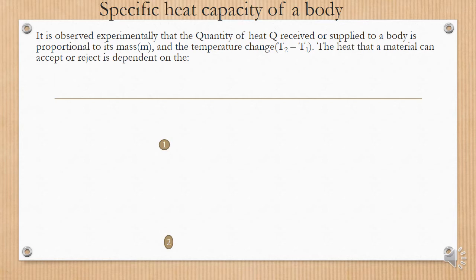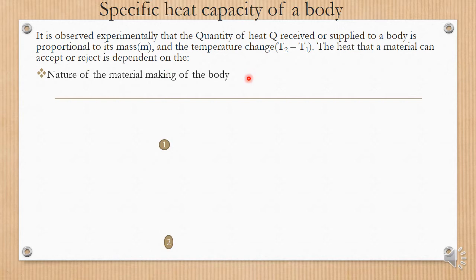It is observed experimentally that the quantity of heat Q received or supplied to a body is proportional to the mass and the temperature change. The heat that a material can accept or reject depends on two things: one, the nature of the material making up the body, and two, the mass of the body.